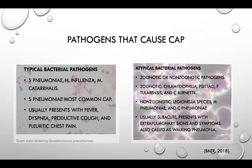On the other hand, atypical community-acquired pneumonia pathogens can be differentiated by zoonotic or non-zoonotic pathogens. Zoonotic pathogens include Chlamydophila psittaci, F. tularensis, and C. burnetii. Non-zoonotic pathogens include Legionella species, M. pneumoniae, and C. pneumoniae. Atypical bacterial pathogens are usually subacute and associated with extrapulmonary signs and symptoms. Atypical pneumonia is also called walking pneumonia.